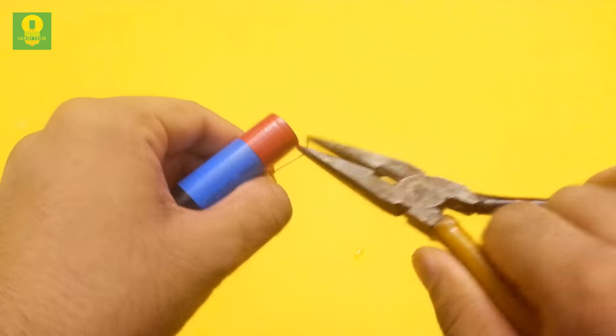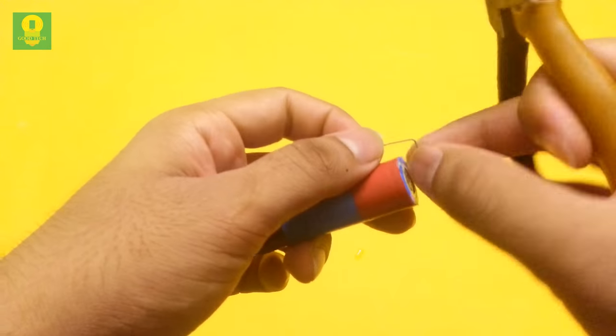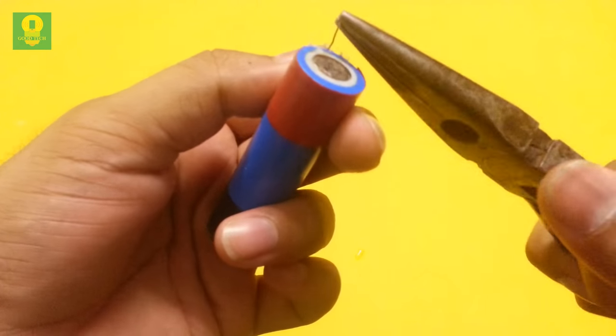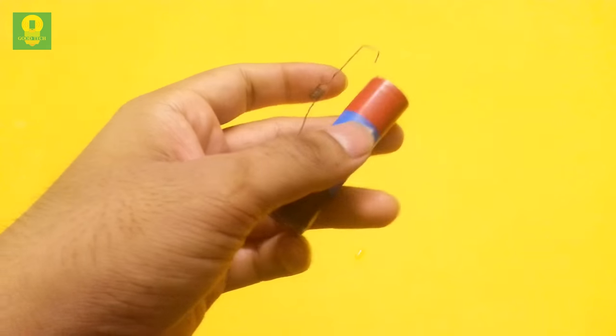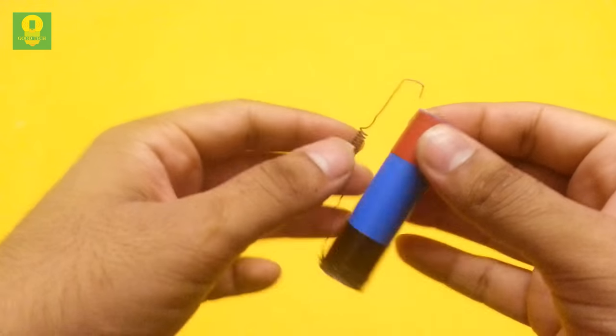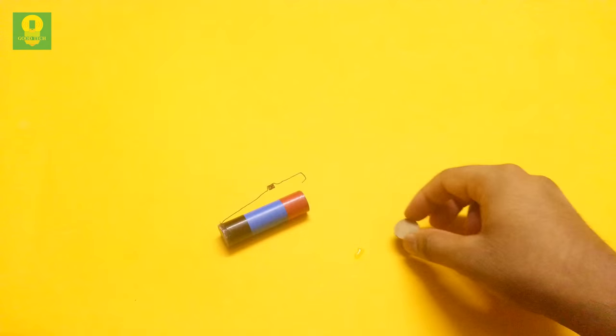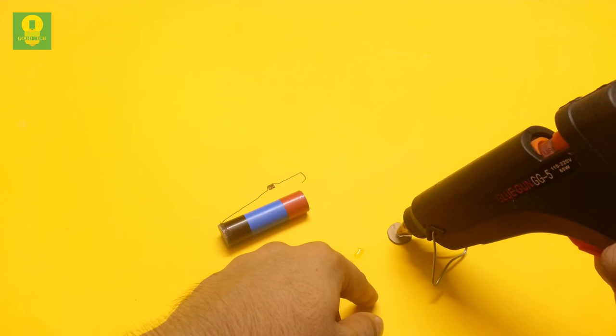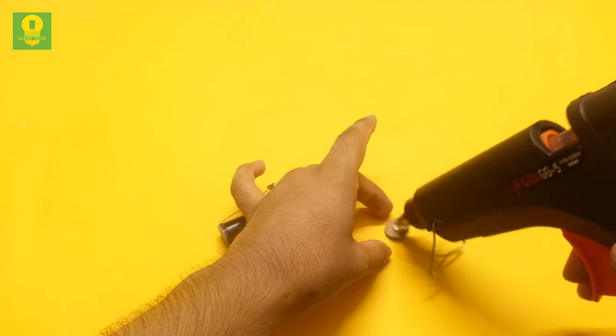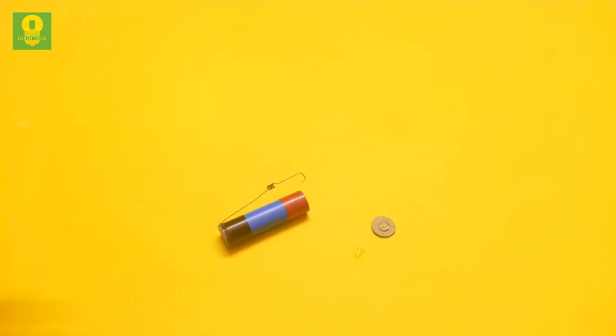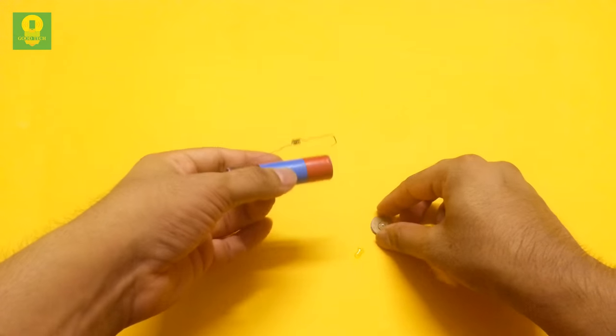Bend the other side of wire as shown. Take another small piece of cardboard. Apply hot glue and paste the cardboard over the wire.